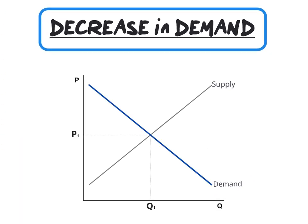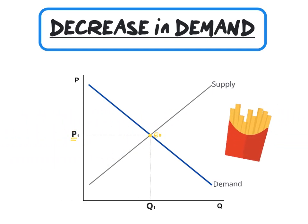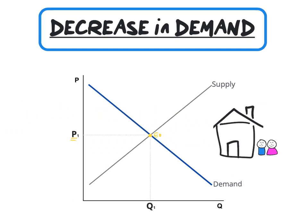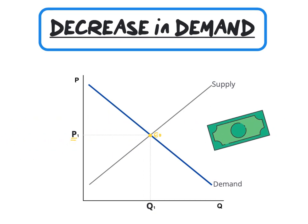Now let's look at a decrease in demand. Again, price is on the y-axis and quantity on the x-axis. Here we have our demand curve and our supply curve. Equilibrium is indicated by E0 where the two curves intersect, giving us equilibrium price and equilibrium quantity. A decrease in demand can be caused by: a decrease in the price of a substitute, an increase in the price of a complement, a decrease in household size, a decrease in consumer income, and a change in taste and preferences away from burgers.